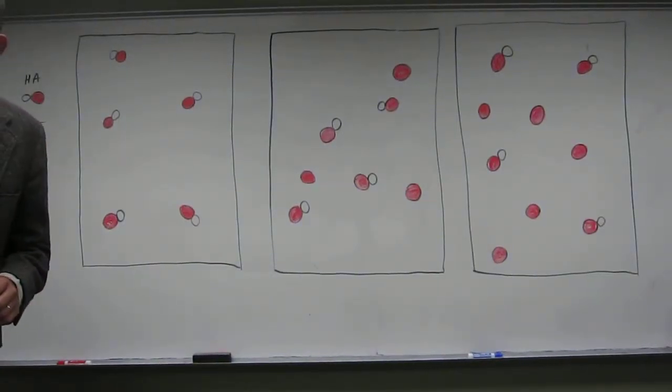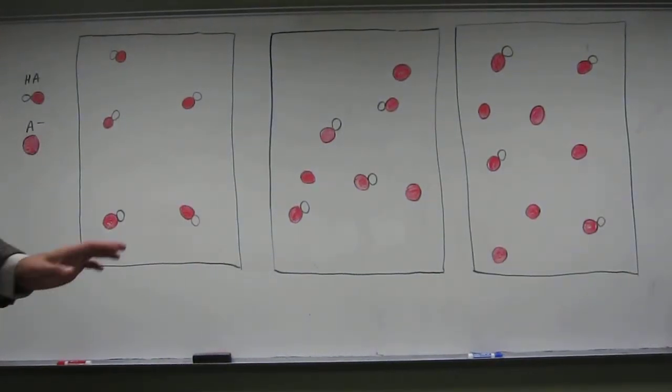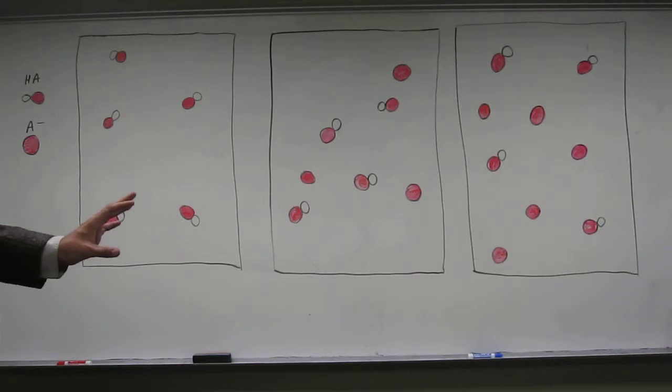So this question is asking us: looking at the following pictures of a solution of a weak acid, some of which also contain the conjugate base of the weak acid—the sodium salt. Which solution would have the highest percent dissociation of HA? That's what we're looking at.